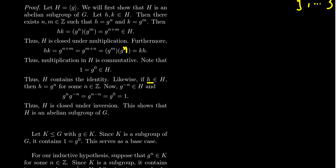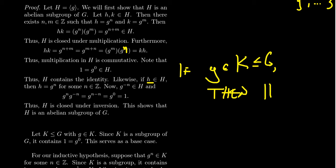Now to show that H is the smallest subgroup of G containing little g, we need to clarify what 'smallest' means. It means that if we take any other subgroup K inside of G that contains little g, then H is a subgroup of K. To show H is a subgroup of K, we just need to show it's a subset, because the subgroup relationship is transitive: if H is a subgroup of K and K is a subgroup of G, then H is a subgroup of G. So it suffices to show H is a subset of K — that's what we mean by H being the smallest subgroup containing g.